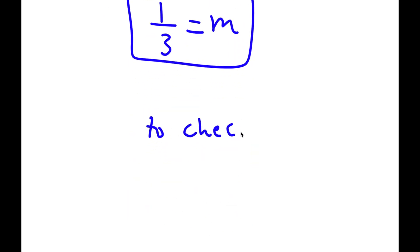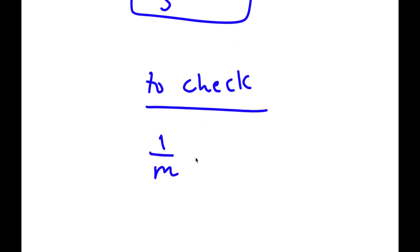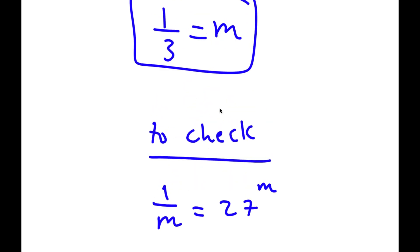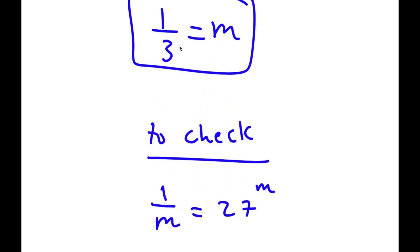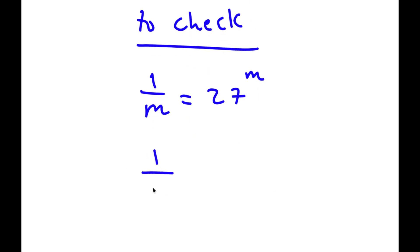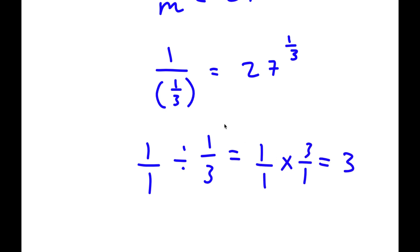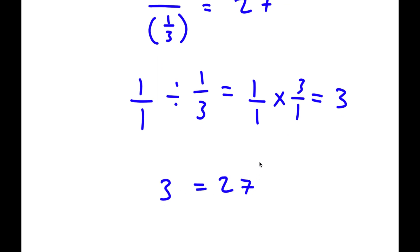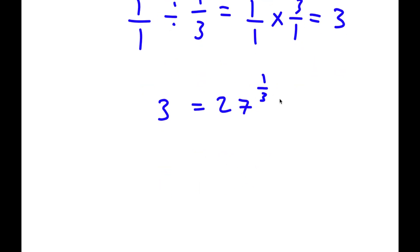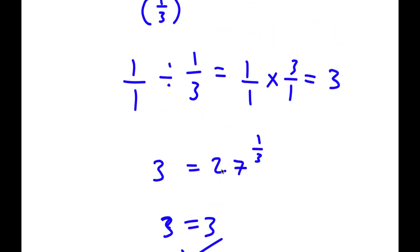To check, I start with 1 over m is equal to 27 to the power of m, and we know that m is 1 over 3. So now I have 1 over 1 over 3 is equal to 27 to the power of 1 over 3. Now, 1 divided by 1 over 3 is the same as 1 over 1 times 3 over 1, which equals 3. So I have 3 is equal to 27 to the power of 1 third. Well, 27 to the power of 1 third is the same as the cube root of 27, and the cube root of 27 is 3. So I have 3 is equal to 3, confirming my solution is correct.